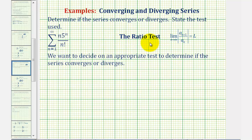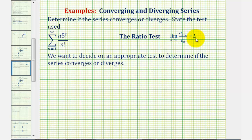To apply the ratio test, we want to find the limit as n approaches infinity of the absolute value of a sub n plus one divided by a sub n. Then, based upon the value of this limit, or L, we can determine if the series converges, diverges, or if the test fails.